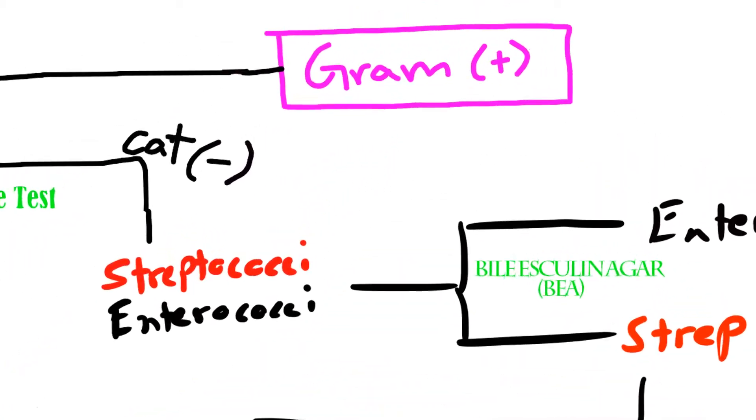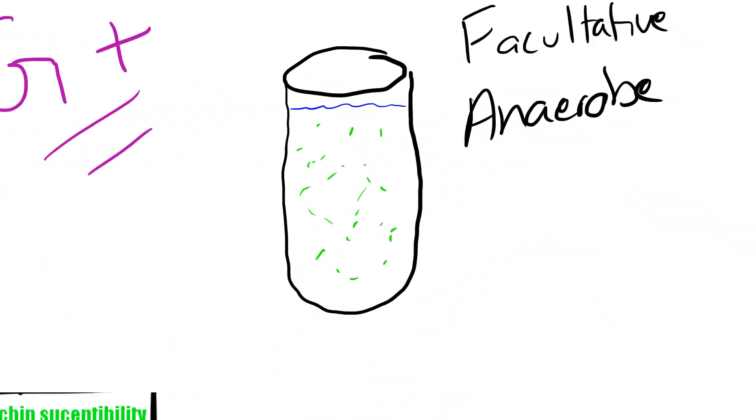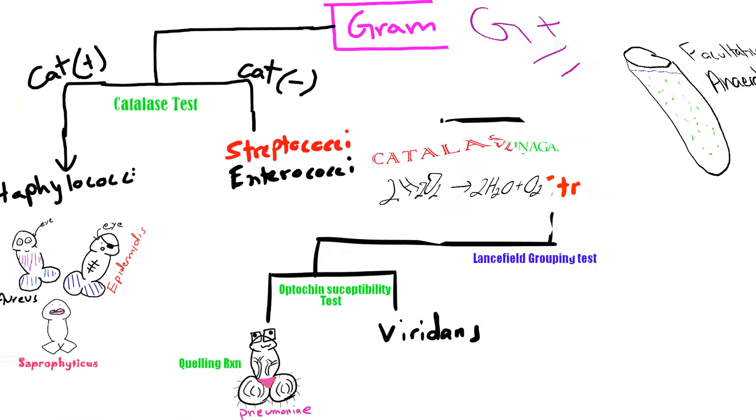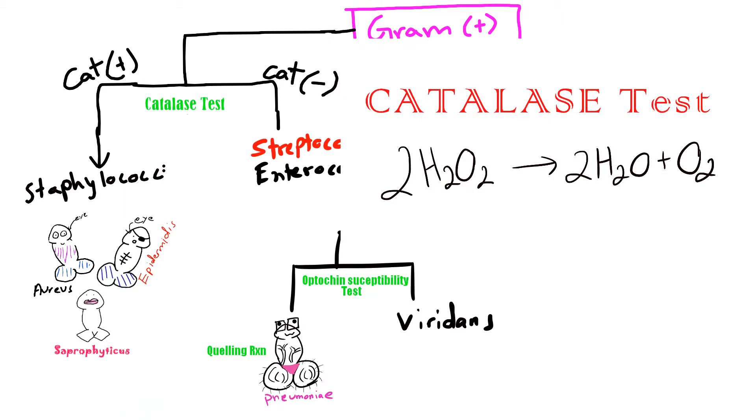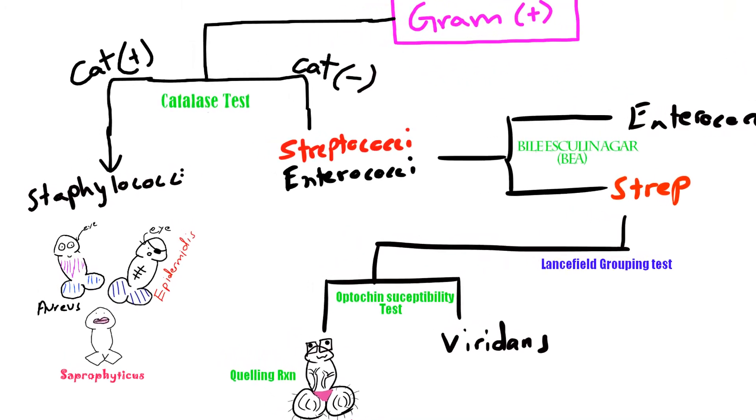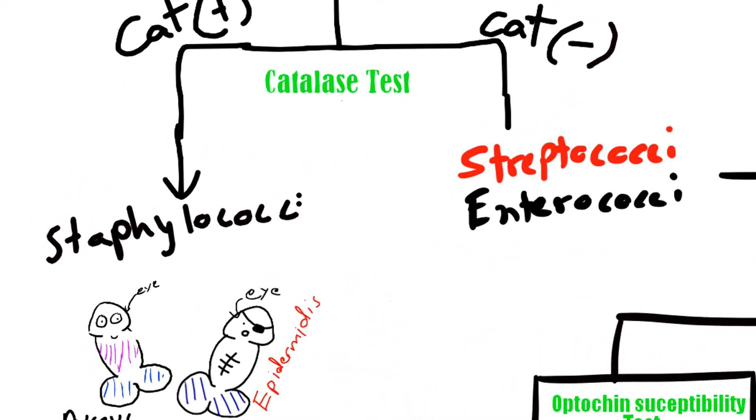So what is streptococcus pneumoniae? It is a gram positive streptococci and a facultative anaerobic organism. It is catalase negative, so it can't break down hydrogen peroxide to water and oxygen. And this is a test we use to distinguish staphylococcus from streptococcus organisms.